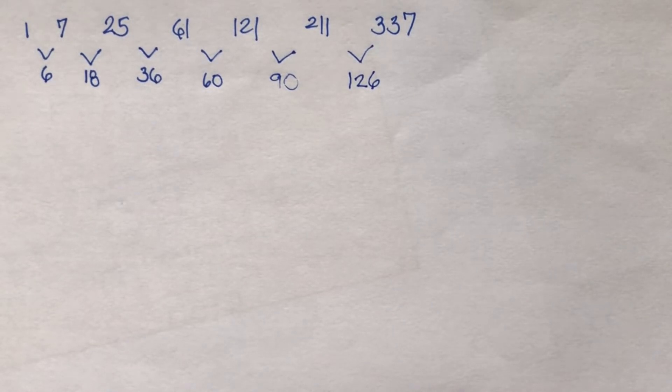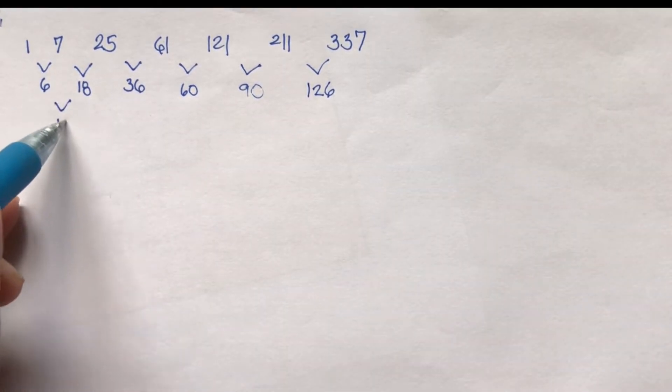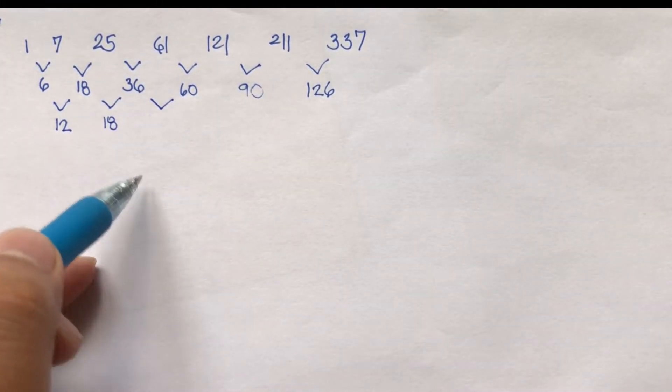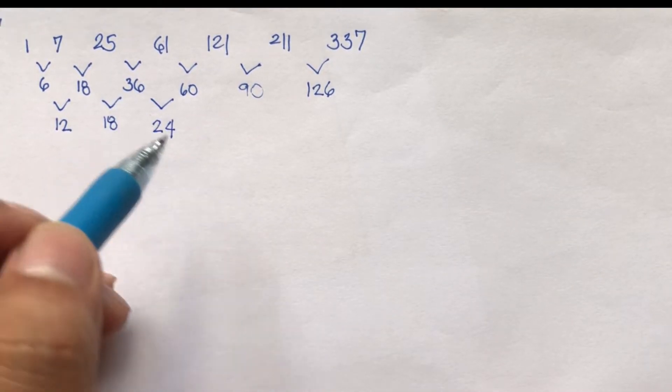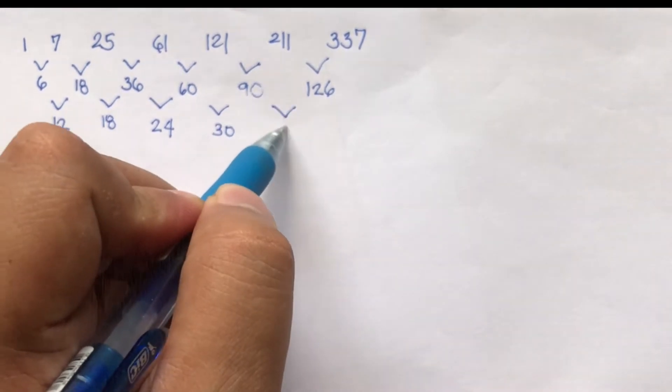So indeed, this is not a first-degree. Let's go further. 6 to 18 is 12, 18 to 36 is 18, then 36 to 60 is 24, then 60 to 90 is 30, then 90 to 126 is 36.